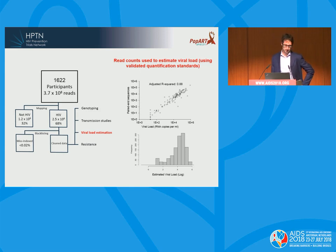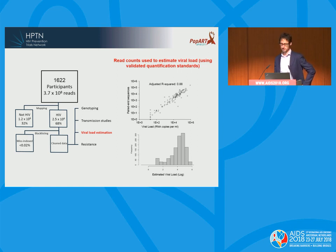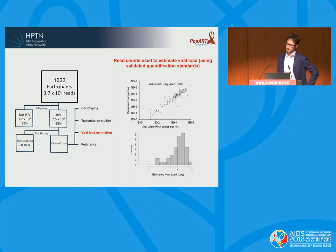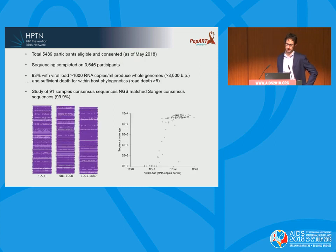The first 1,622 participants in the trial generated about 400 million sequences, and after enrichment about 68% were HIV. The Phyloscanner pipeline also identifies contamination and sequencing artifacts and removes them. As sequencing is quantitative, viral load correlates strongly with the number of reads obtained. By including a standard curve of clinically validated quantitation standards in every run, we can estimate viral load from this $40 test.